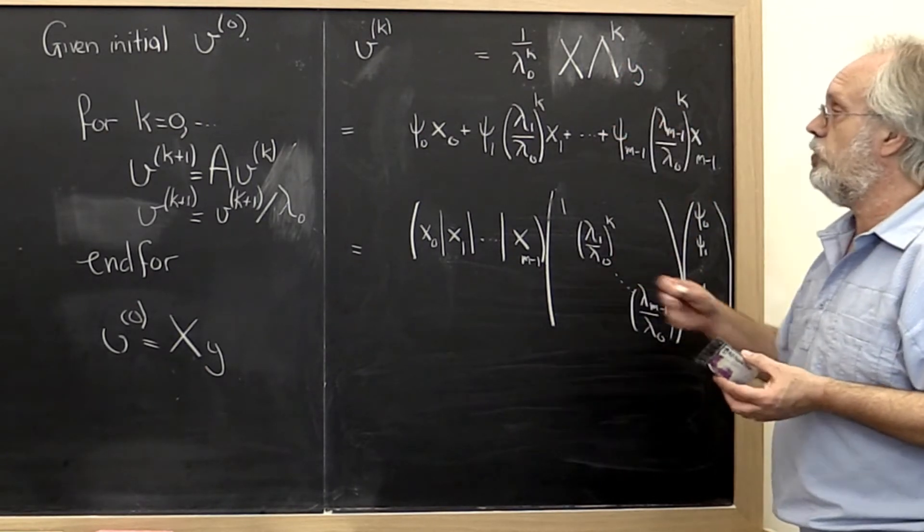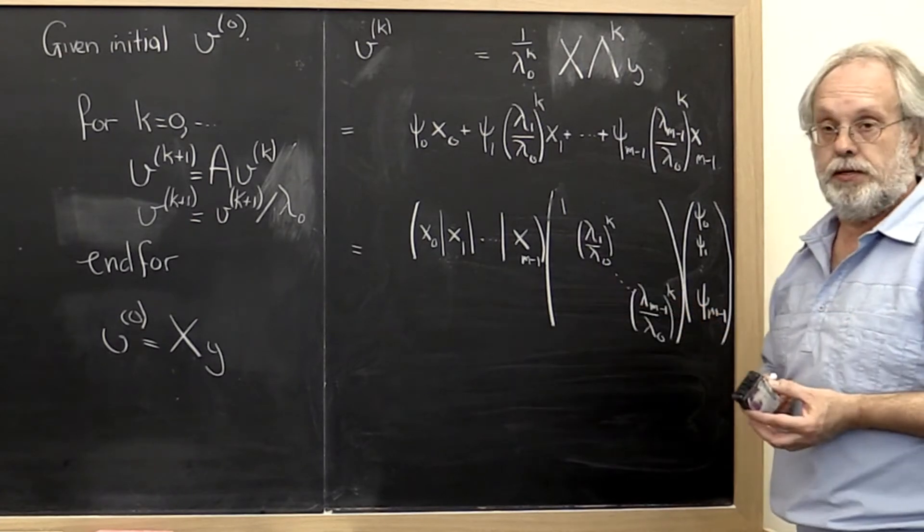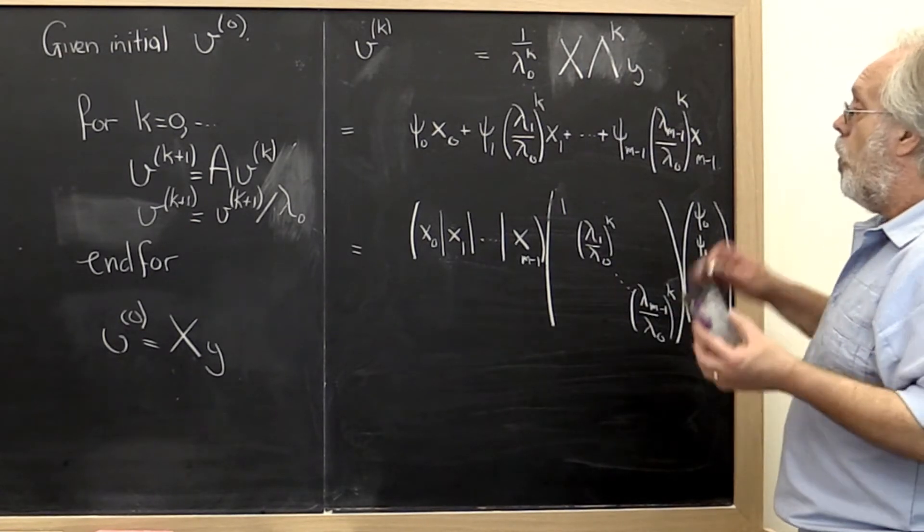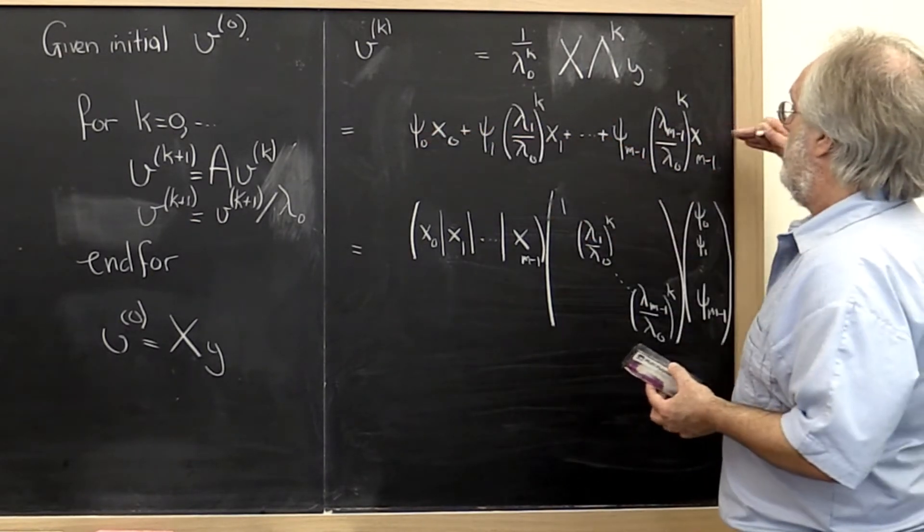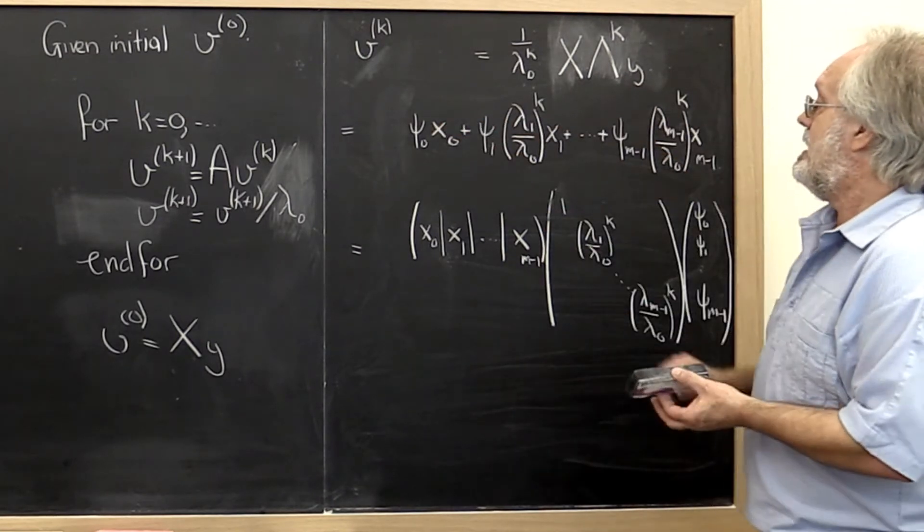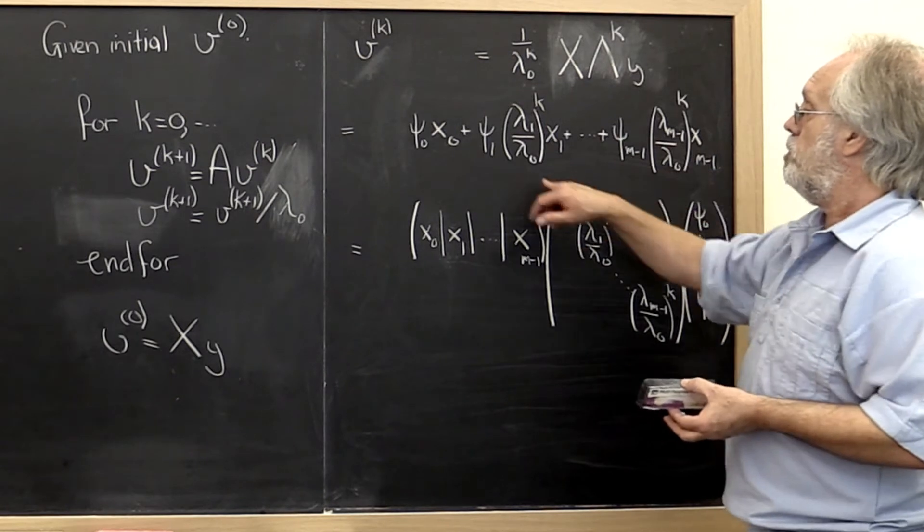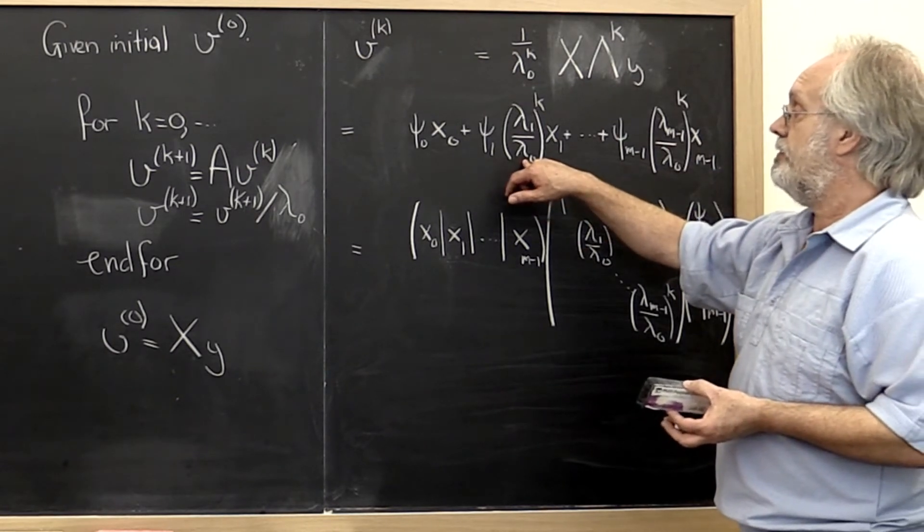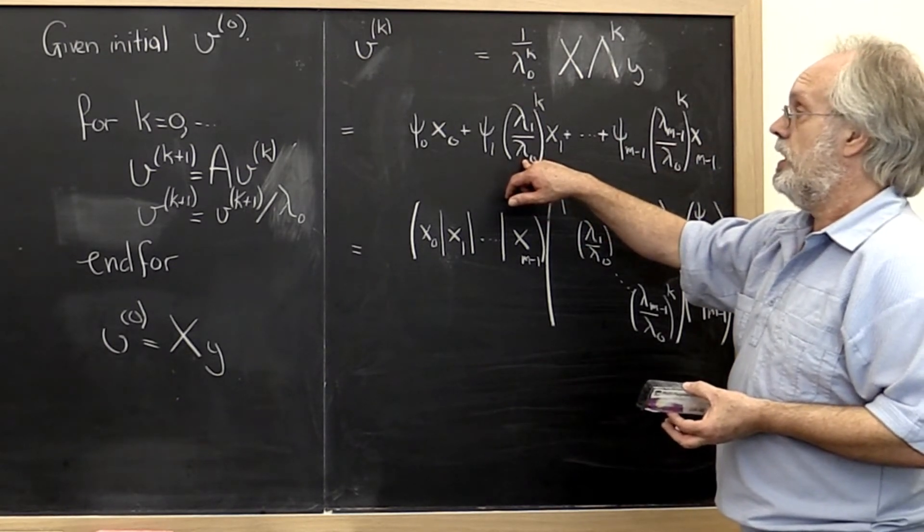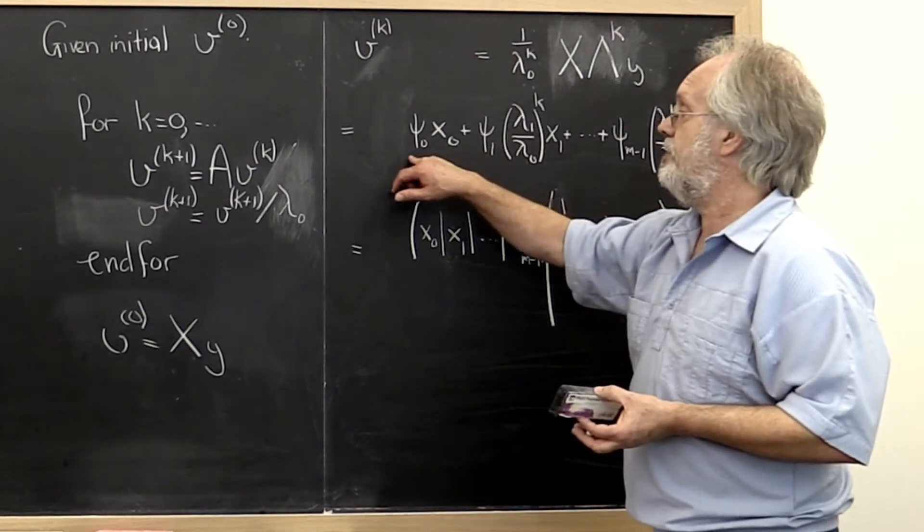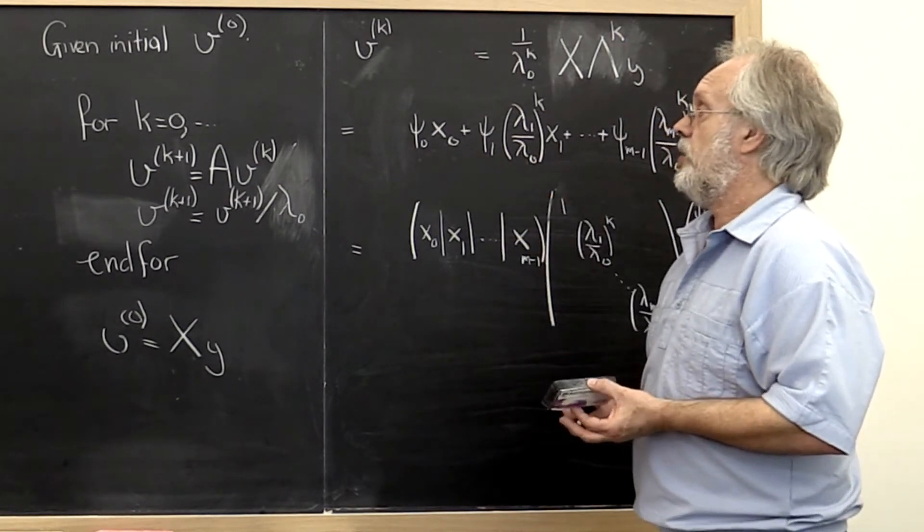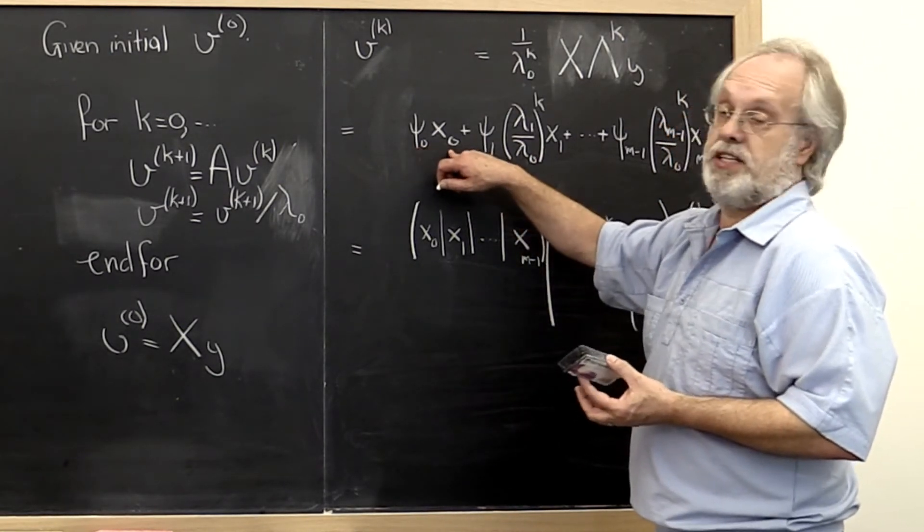And each of these different ways of looking at it will tell us a little bit. What this particular formulation tells us is that eventually all of these terms become arbitrarily small because lambda 0 is the eigenvalue largest in magnitude, which means that we expect to eventually point in the direction of psi 0 times x0.